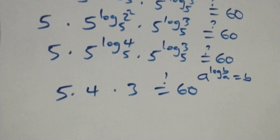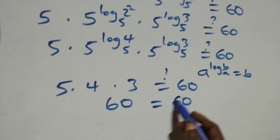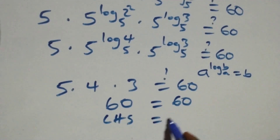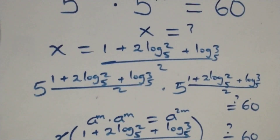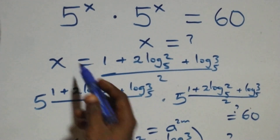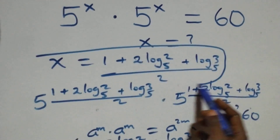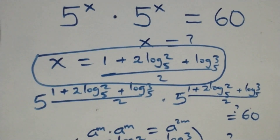Five times four is twenty, and twenty times three is sixty, which equals sixty on the right-hand side. Therefore the left-hand side equals the right-hand side. We conclude that x equals one plus two log base five of two, plus log base five of three, all over two, satisfies the given problem. Thank you for watching — don't forget to subscribe for more videos, turn on the notification bell, share this video, give a thumbs up, and leave a comment. See you next lesson!